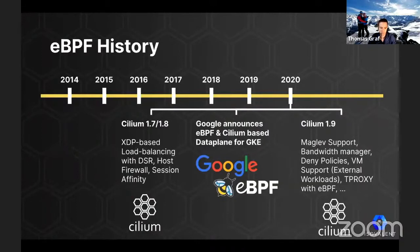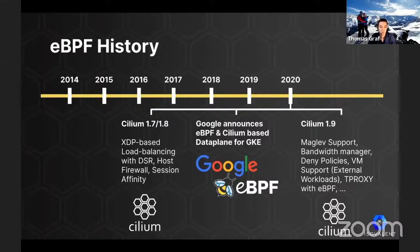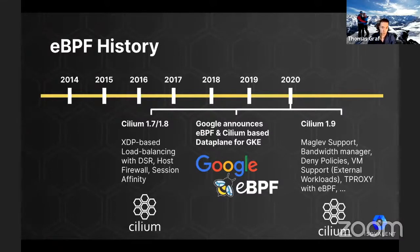This brings us to today. This year, Cilium 1.7 and 1.8 have already been released, bringing XDP-based load balancing with DSR, similar to how it is done with Katran, the ability to protect the host itself with eBPF, as well as session affinity for load balancing. Another major milestone was Google's announcement regarding the availability of their new networking data plane for GKE — Google's Kubernetes engine — built entirely on Cilium and eBPF. Looking a bit into the future, in a couple of weeks we will be releasing Cilium 1.9, which will bring Maglev support, consistent hashing, a bandwidth manager, deny policies, VM support, support for external workloads running on VMs or metal outside of Kubernetes, and t-proxy support with eBPF.